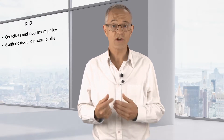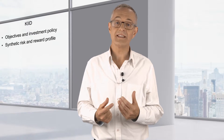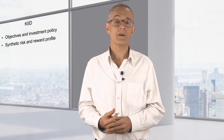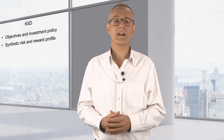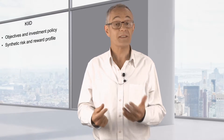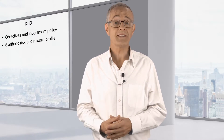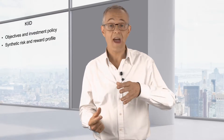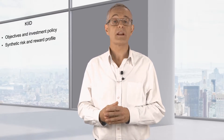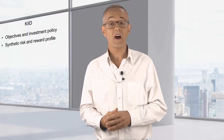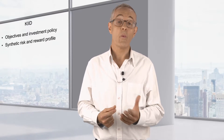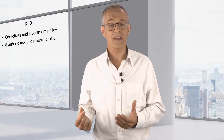The calculation of the synthetic risk and reward indicator is set down in the rules, with different versions of the calculation for different types of fund. In simple terms, the volatility of the fund — i.e. the variability in its price — is calculated for the last five years and then assigned to one of seven risk classes, one being low and seven being high.